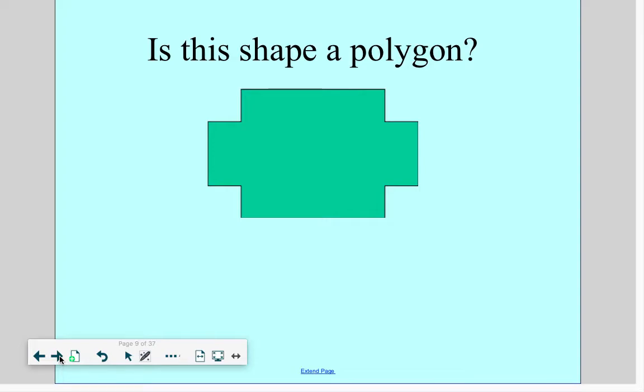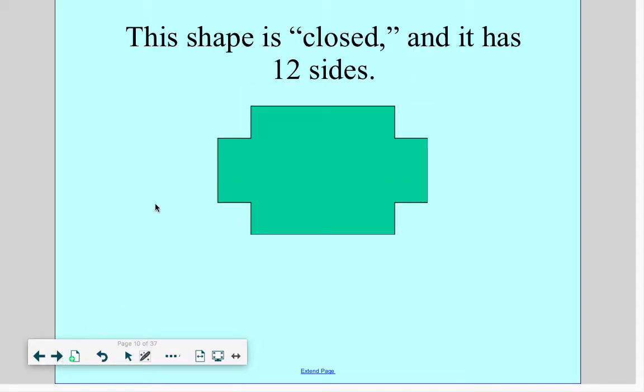Is this a polygon? Well, when you look at a shape, you should ask yourself three questions. Is it flat? Is it closed? Does it have straight sides? If you can answer yes to all three questions, then yes, the shape is a polygon.